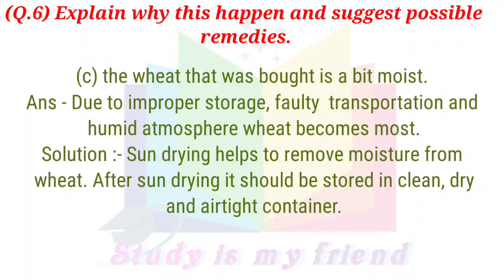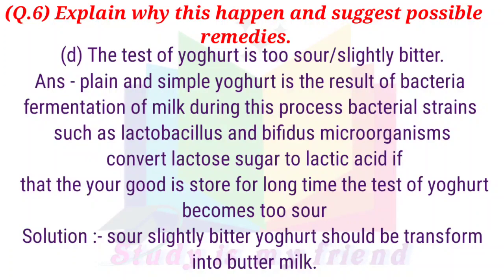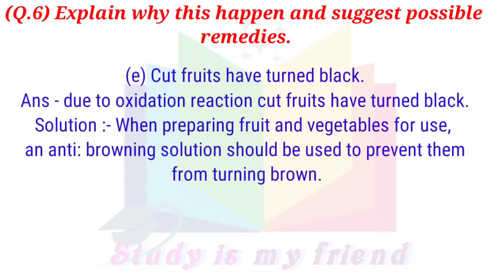After sun drying, wheat should be stored in a clean, dry, and airtight container. D. The taste of yogurt is too sour and slightly bitter. Answer: Yogurt is the result of bacterial fermentation of milk. During this process, bacterial strains such as Lactobacillus and Bifidus convert lactose sugar to lactic acid. If yogurt is stored for a long time, the taste becomes too sour. Solution: Sour, slightly bitter yogurt should be transformed into buttermilk. E. Cut fruits have turned black. Answer: Due to an oxidation reaction, cut fruits have turned black. Solution: An anti-browning solution should be used to prevent them from turning brown.